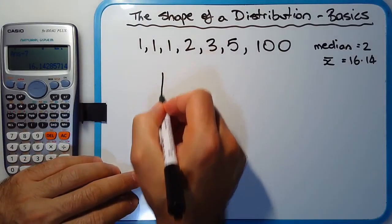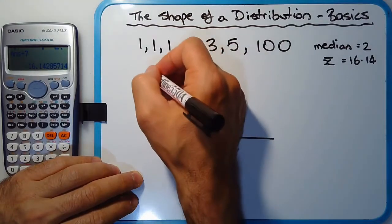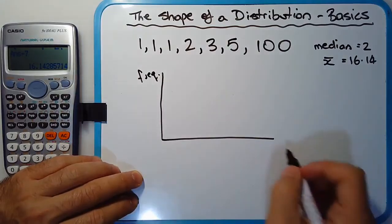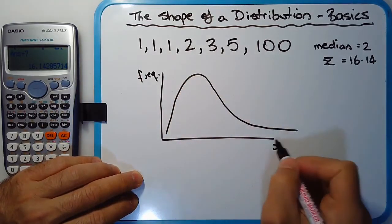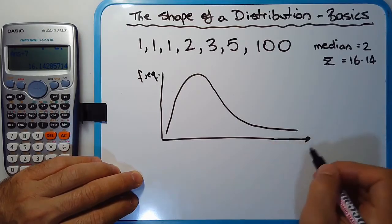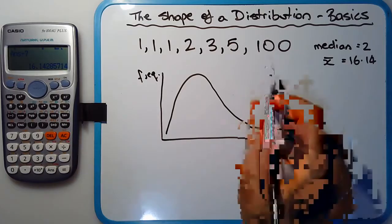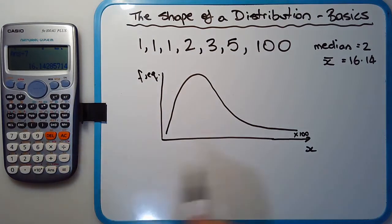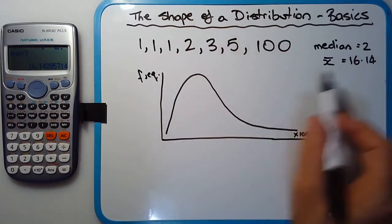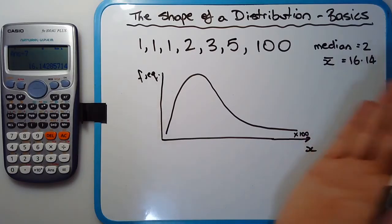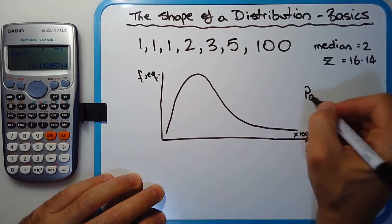Drawing this as a distribution would look something like this. You can see that most of the numbers are quite low. The y-axis is normally frequency and the x-axis is your scores. The bulk of the scores are toward the left-hand side, and the 100 would be somewhere far to the right. This is what we call positively skewed data, because the outlier creates a tail and skews the mean to the positive side. So this is a positively skewed distribution.